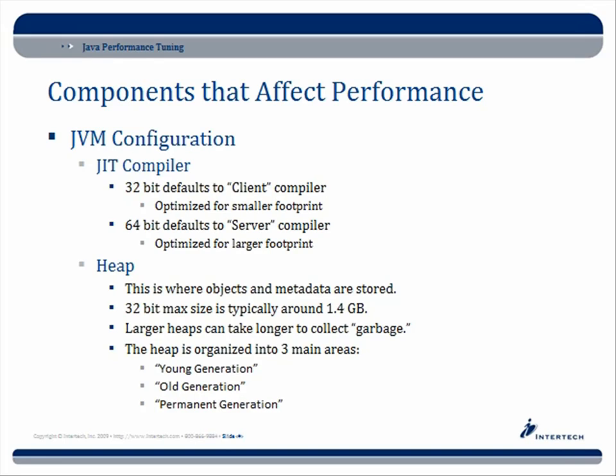In addition to the compiler, we have the heap to consider. The heap is where all of your objects and metadata about classes and objects are stored. On a 32-bit system, the real max size you can usually have for your heap is around 1.4 gigabytes.